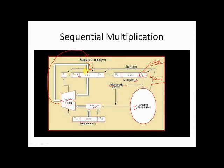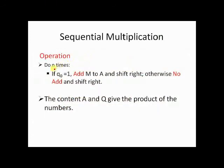After each operation — that is add or no add — there is a shifting towards the right, because register A and Q are shift registers. In the algorithm, this is done n times: checking bit q0 whether it is 1 or 0, then add or no add, and shifting right. N will be the number of bits in the multiplier, so if the multiplier register has 4 bits, then this operation has to be done 4 times.